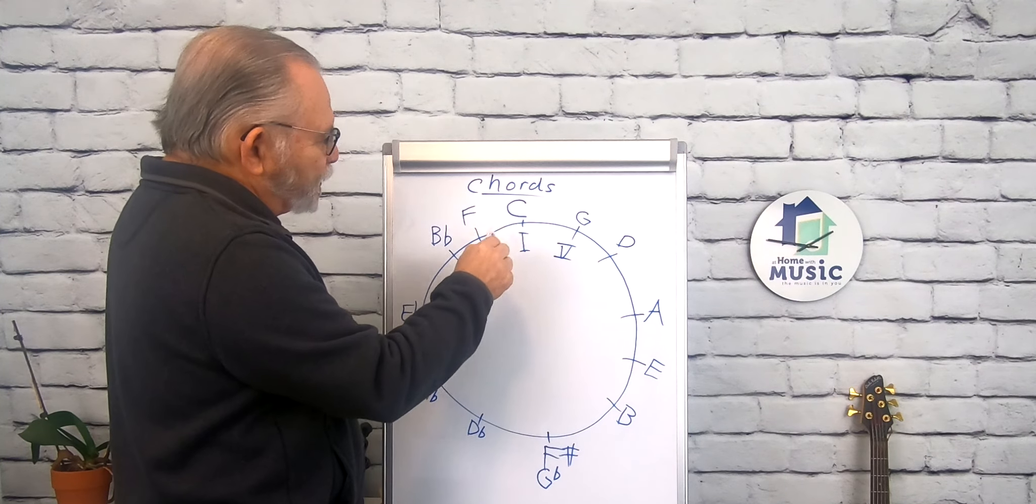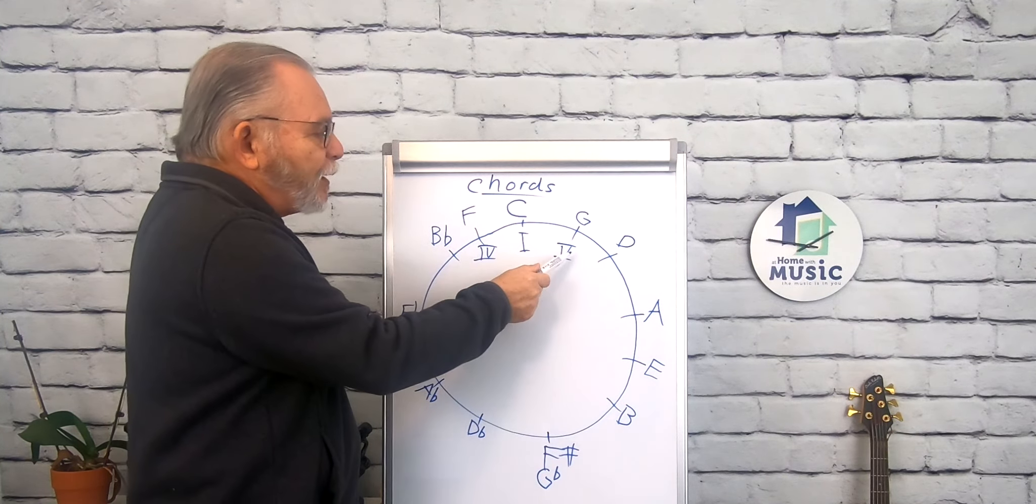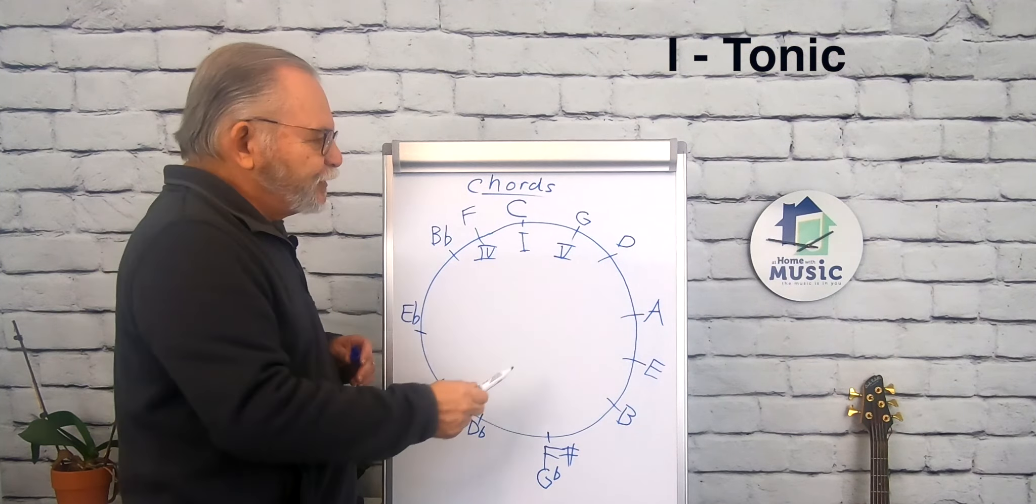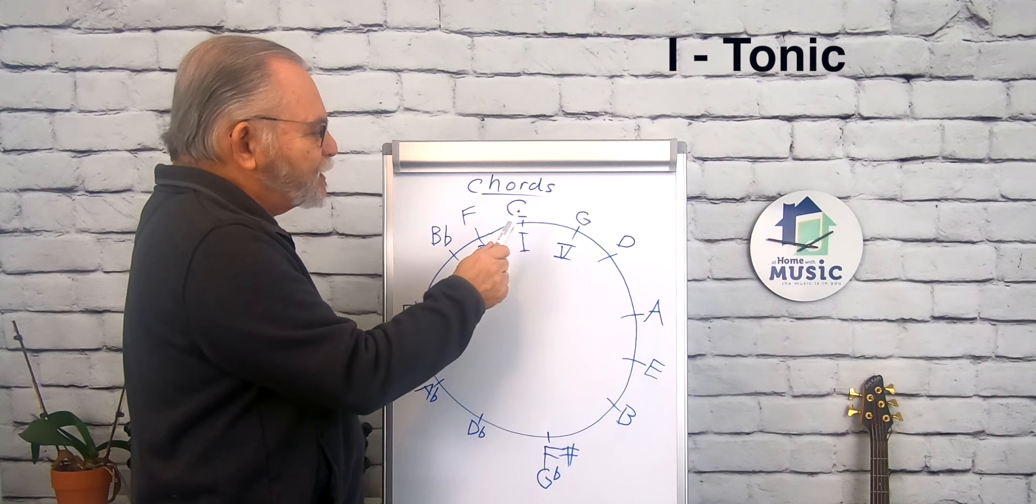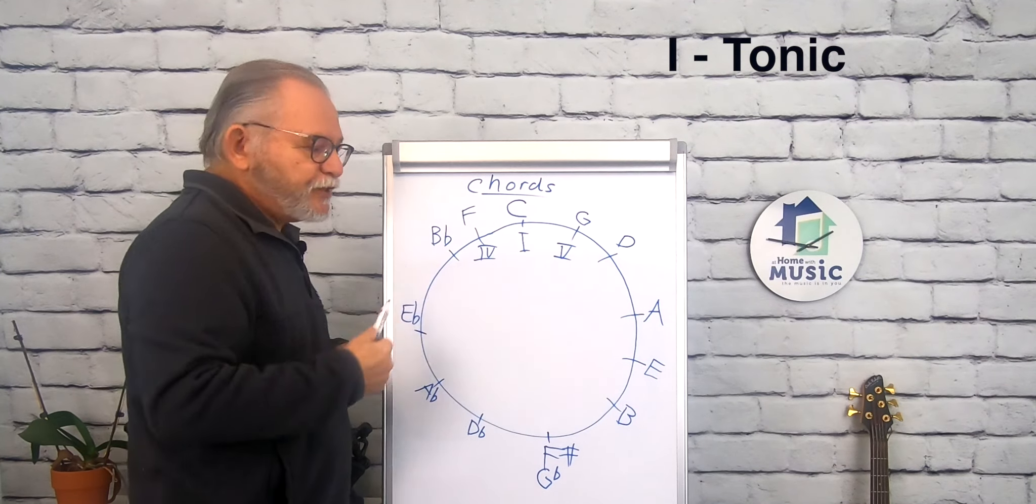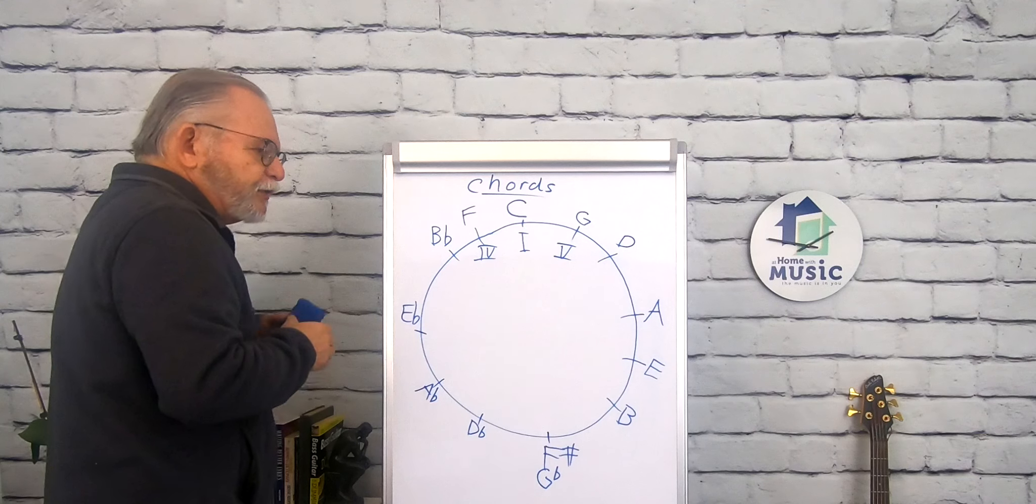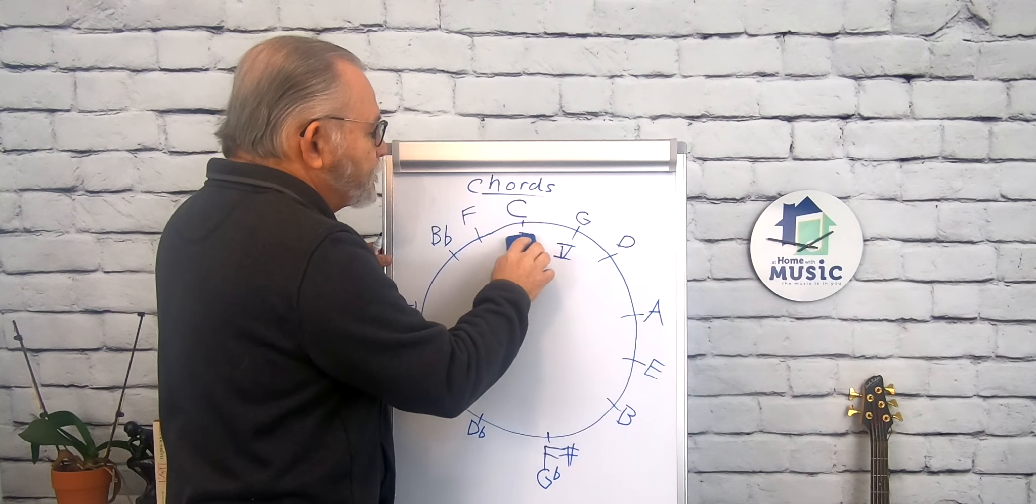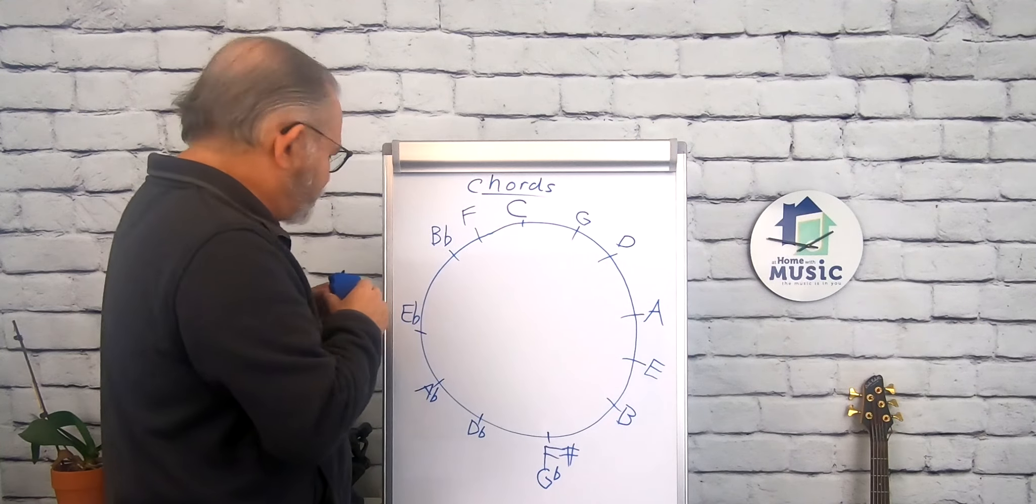So I have found the subdominant, the dominant, and the tonic. So you can remember those three terms: dominant, subdominant, tonic in the key of C. Now I'm going to erase those. And here's where it gets really interesting. Well, it's already been pretty interesting so far, hasn't it?